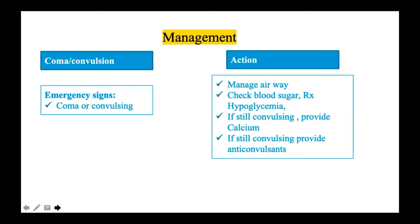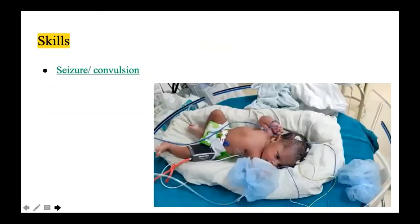If convulsions are still present, administer anticonvulsants. The most commonly used anticonvulsant in neonates is phenobarbital — loading dose of 20 mg/kg given over 1 hour, followed by maintenance of 3–5 mg/kg. If convulsions persist, consider a mini loading dose. Levetiracetam is increasingly preferred due to its favorable safety and availability profile.